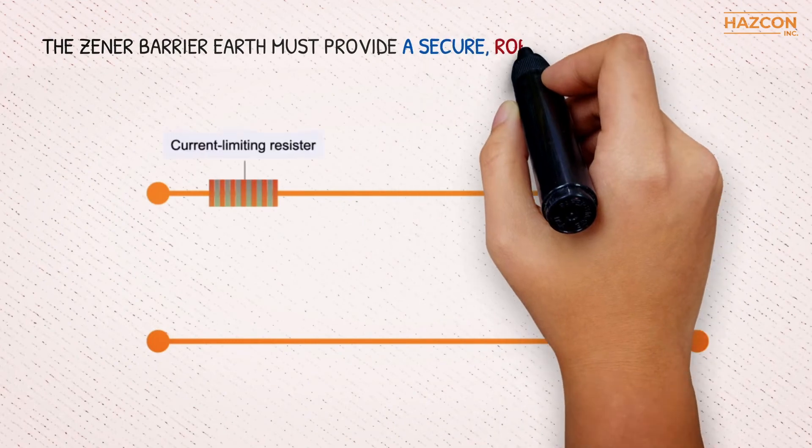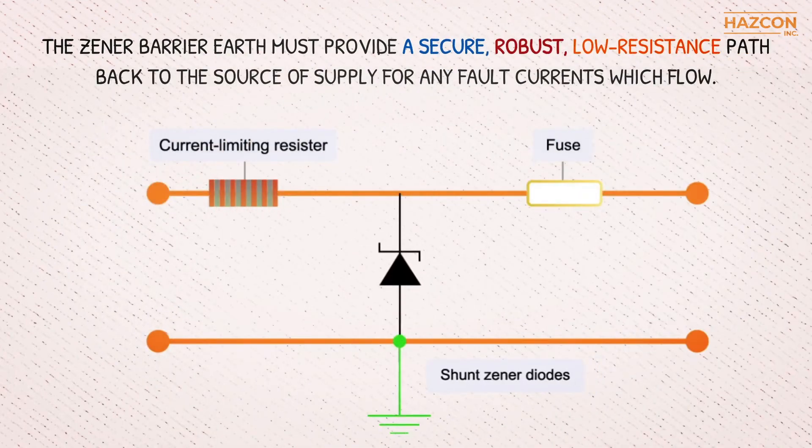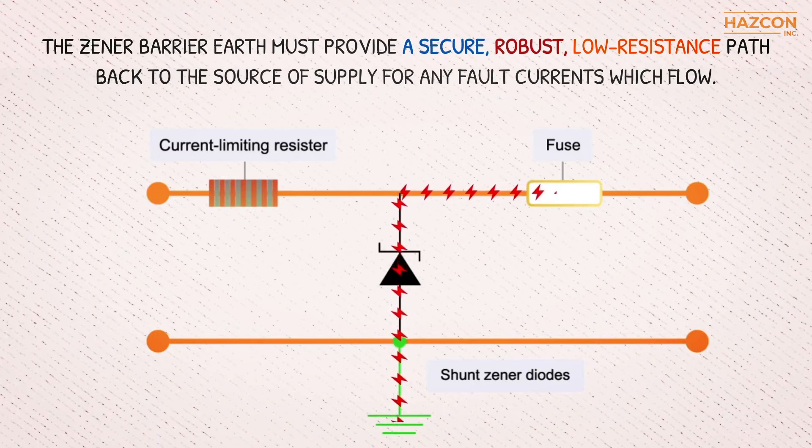In summary, the Zener barrier earth must provide a secure, robust, low-resistance path back to the source of supply for any fault currents which flow.